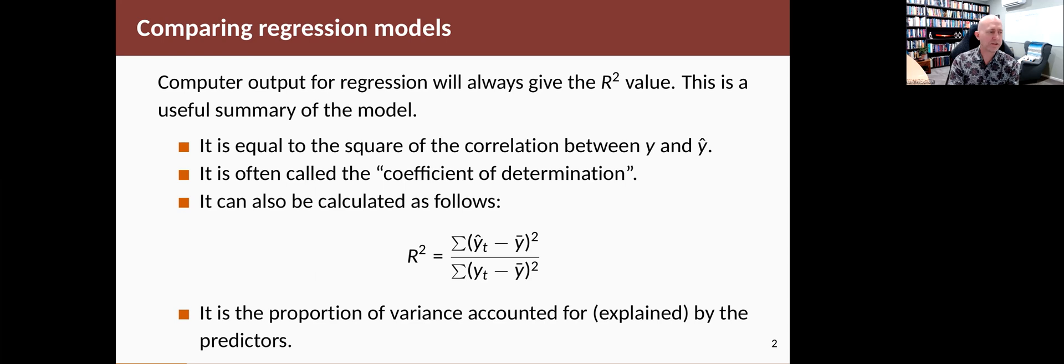There's a number of ways to compute it. In addition to squaring the correlation of the actuals and the fitted values, another way is using this equation here, which when you write it like this, you can see that it's the ratio between the variation in the data.